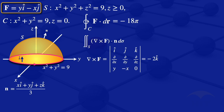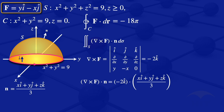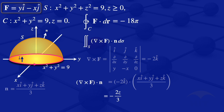Taking the dot product (∇×F)·n: (-2k)·(xi + yj + zk)/3. Since there are no i or j components in ∇×F, only the k terms contribute, giving -2z/3. So ∇×F·n = -2z/3.